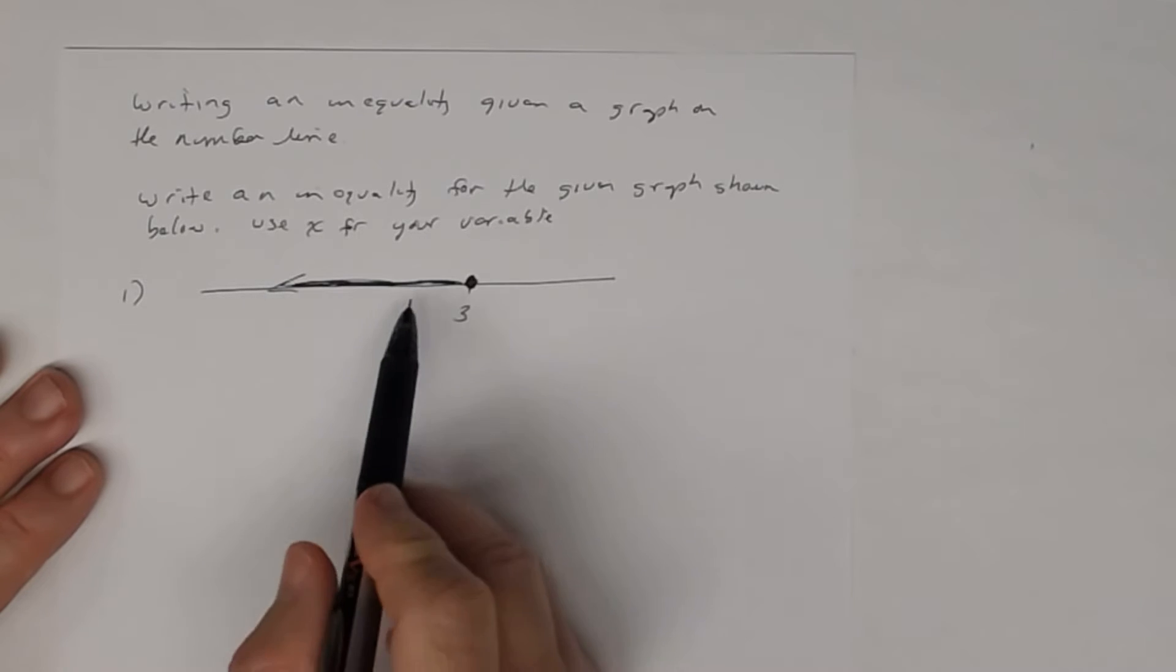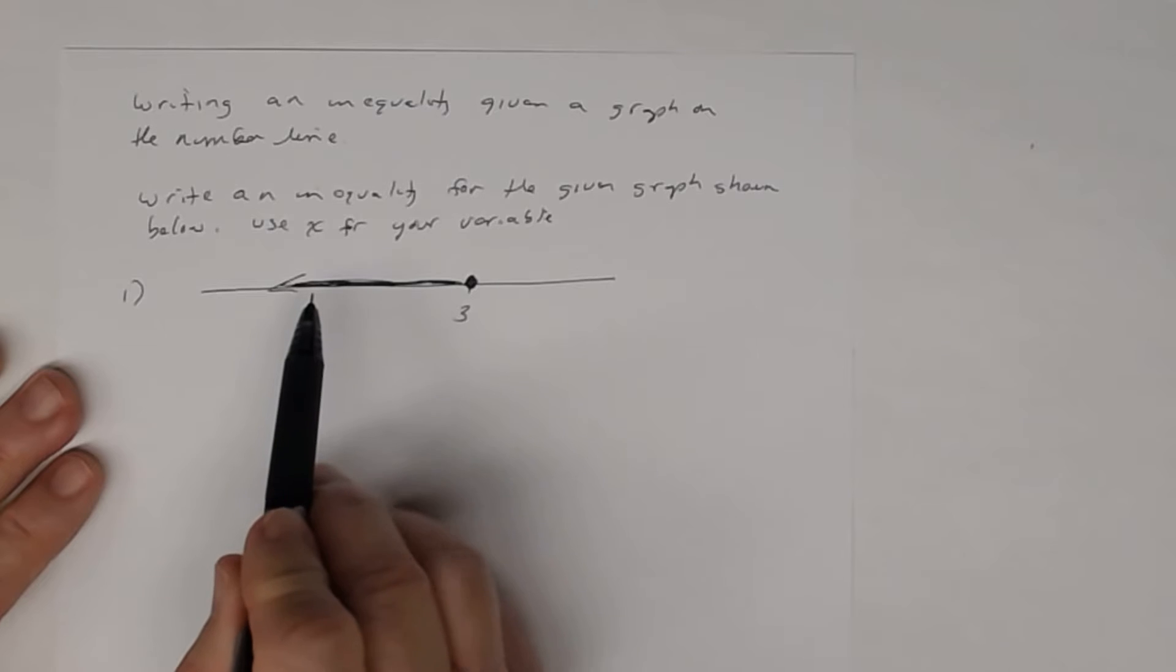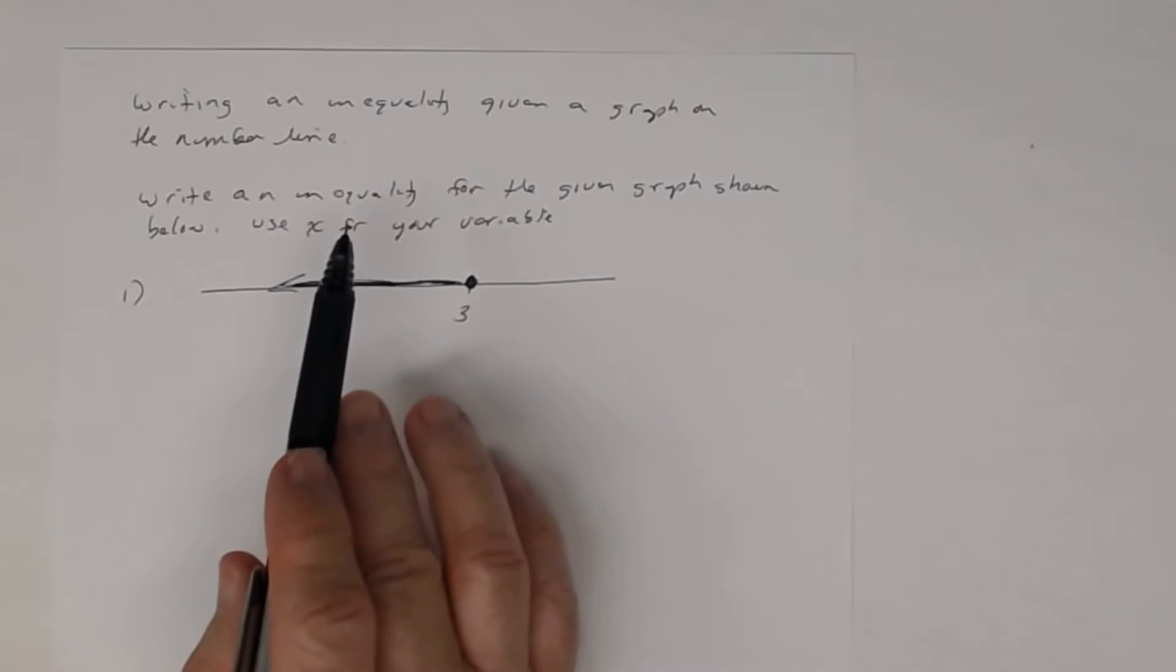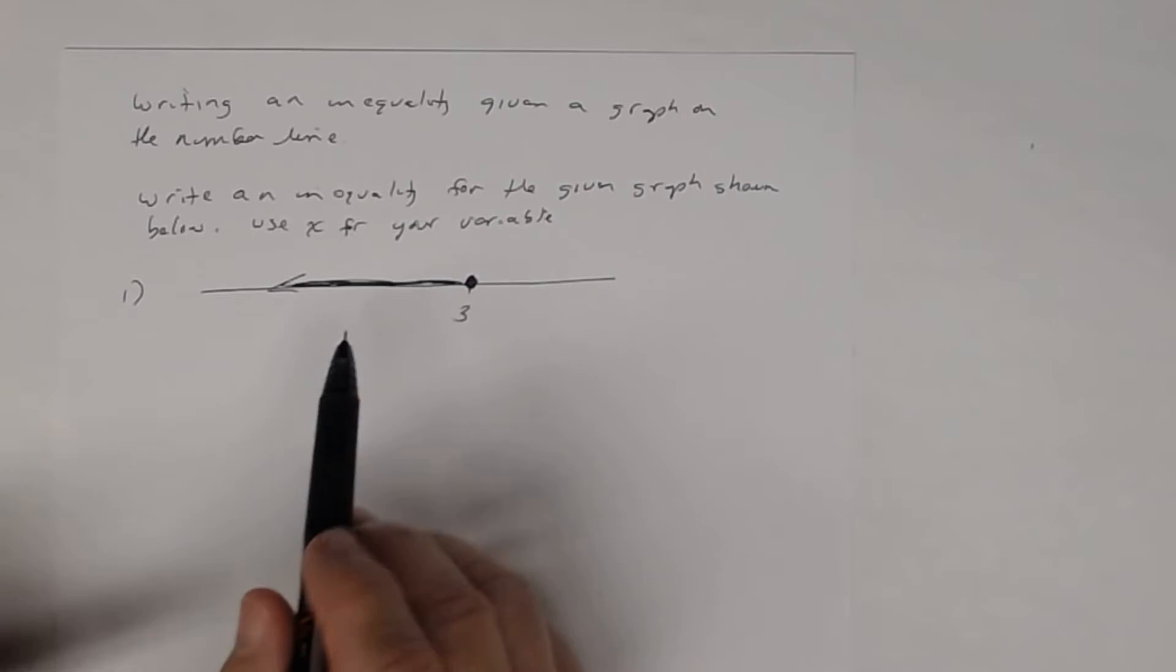These are very simple. Whatever's being shaded in is the solution. Remember, an inequality uses the symbols less than, less than or equal to, greater than, and greater than or equal to.